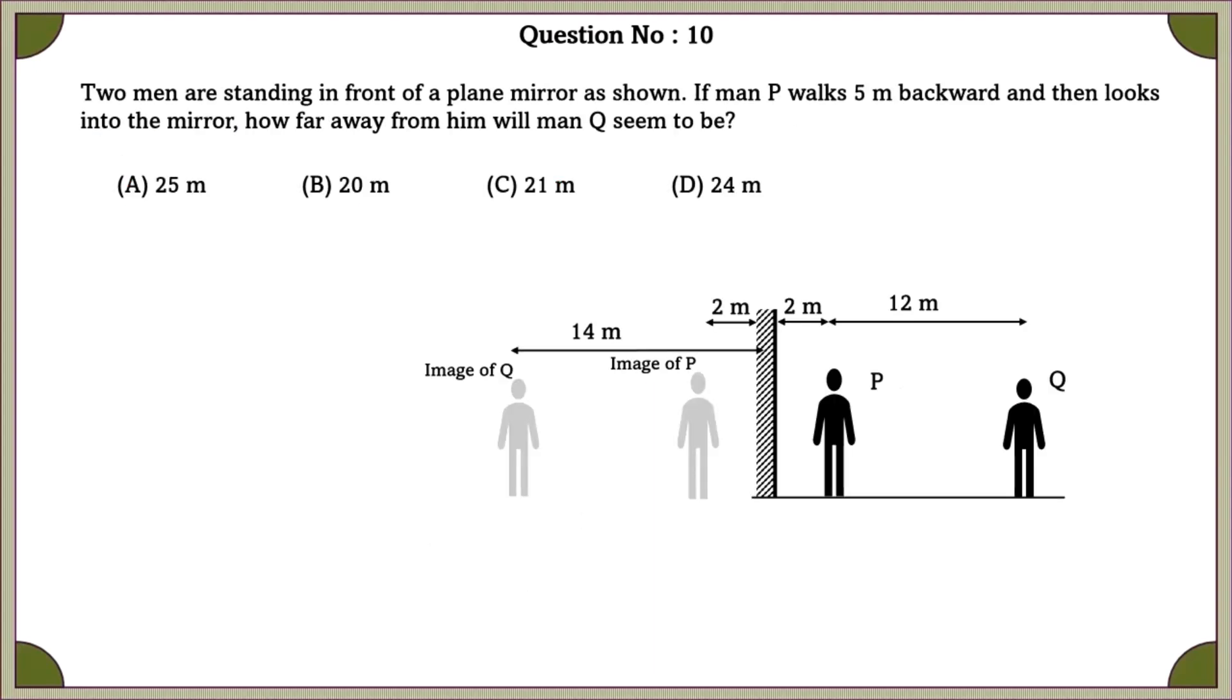Question number 10. Two men are standing in front of a mirror as shown. If man P walks 5 meter backwards and then looks into the mirror, how far away from him will man Q seem to be? Let us calculate the distance between man P and the image of man Q. If we calculate, we will get 21 meters.